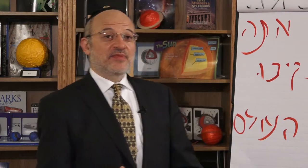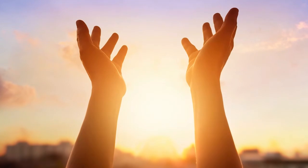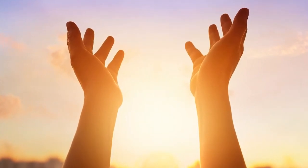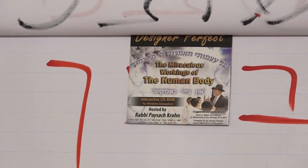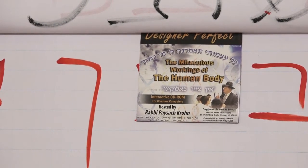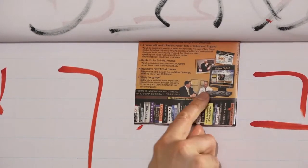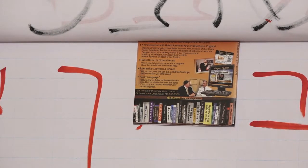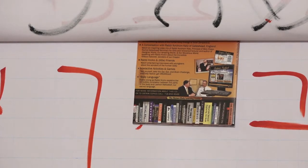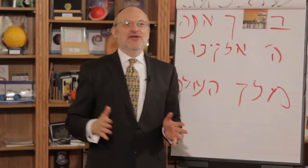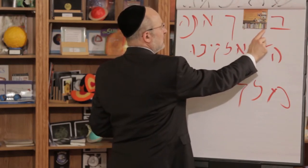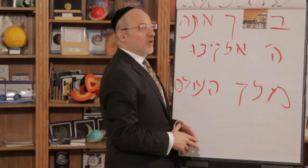A simple message: what should we be grateful to Hashem for when we say al netilas yadayim? Let the children come to it on their own - first and second graders very easily say: our hands. Then we can learn more. At this point I might introduce the children to a DVD by Shimshon Halperin called 'The Miraculous Workings of the Human Body,' featuring Rabbi Pesach Krohn interviewing Jewish doctors who are specialists in specific areas of human anatomy - the spine, kidneys, muscles, nervous system, eye, teeth. You click on a book on a shelf and get an interview describing the niflaos haBorei in that particular part of the body.